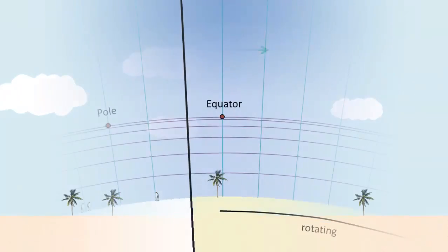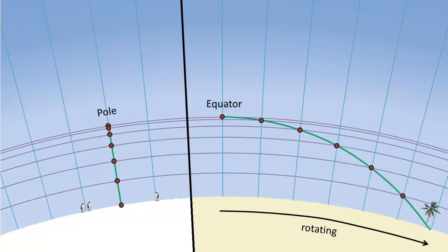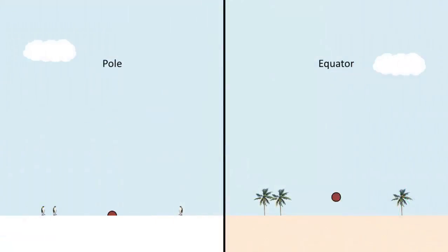A stone dropped at the pole travels along a straight line to reach the stationary ground. A stone dropped on the equator travels along an arc to reach a ground that's curving away from the stone. As a result, a stone dropped on the equator takes a slightly longer time to land, compared to the one dropped at the pole.